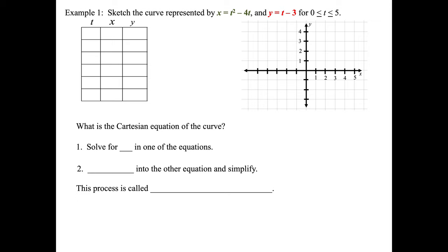Here's an example. Let's sketch the curve represented by x equals t squared minus 4t — that's like a parabola — and y equals t minus 3, which is linear, for 0 ≤ t ≤ 5. Our t values are 0, 1, 2, 3, 4, and 5. We plug the t values into the x equation and into the y equation to get our coordinates to plot at these particular times.